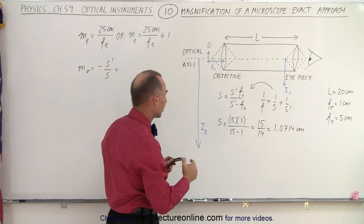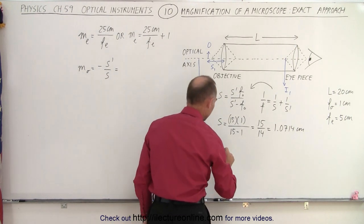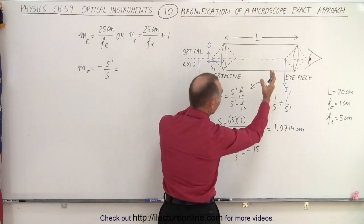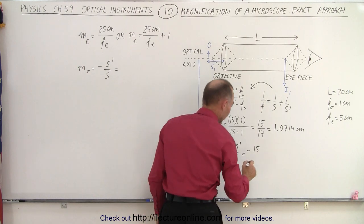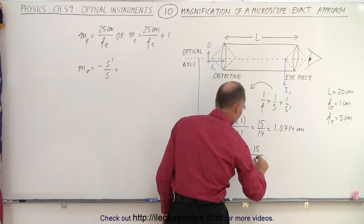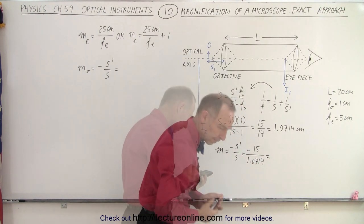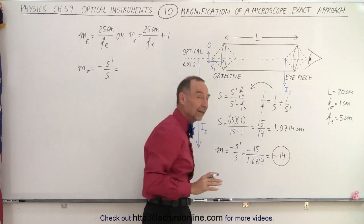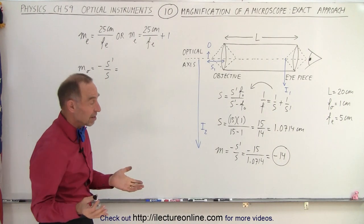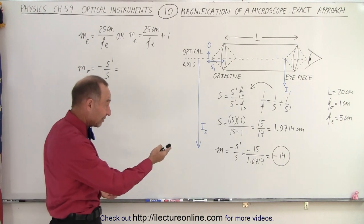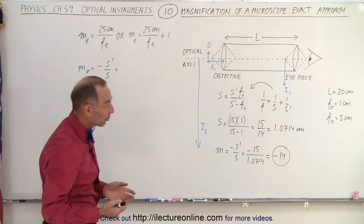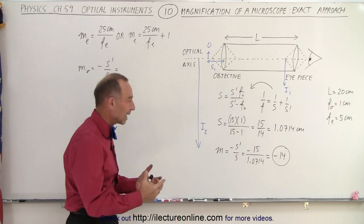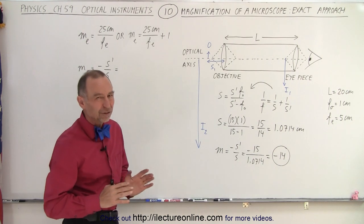Notice the focal length of the objective is 1 centimeter — you actually place the object slightly farther, at 1.0714 centimeters in front of the lens. Now we calculate the magnification: it equals minus s-prime over s, which is minus 15 divided by 1.0714, giving exactly minus 14. In the previous video using the quick method we got minus 20, so there's a fair difference between the exact and approximate values.